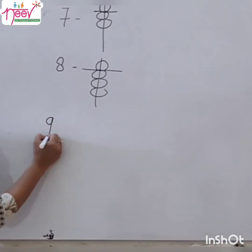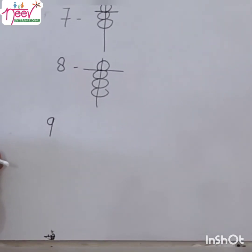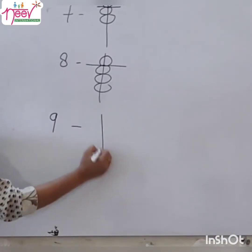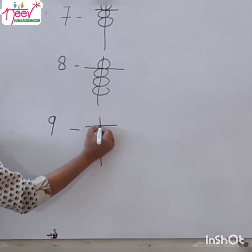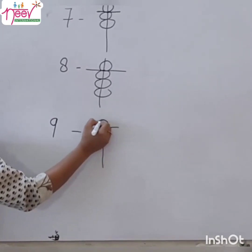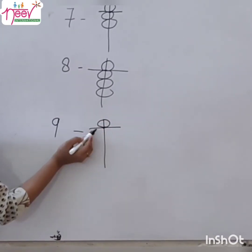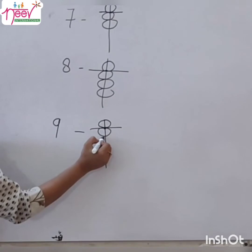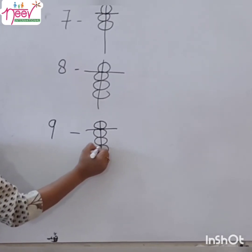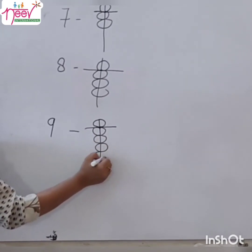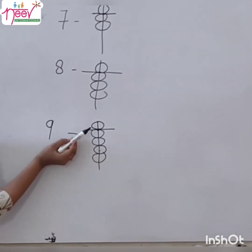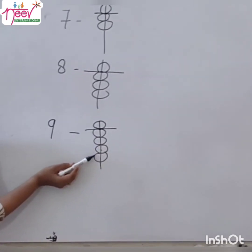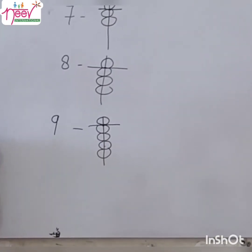Now let's see how to place value 9. Make 1's rod, place the upper bead — that is value 5 — and 4 lower beads like this. We count: 5, 6, 7, 8, 9. This is value 9.